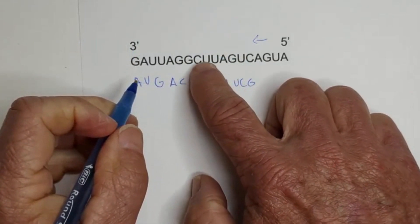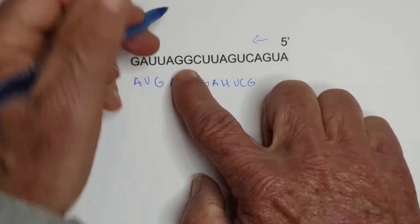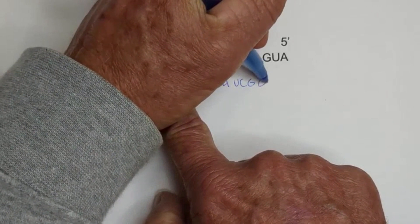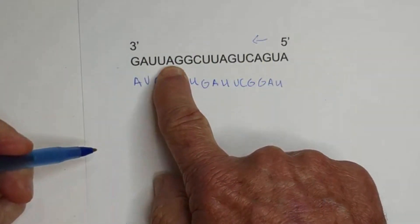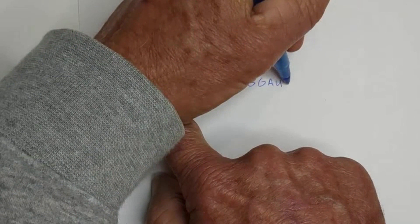Okay, that was UCG, then we have GAU, and then we have UAG.